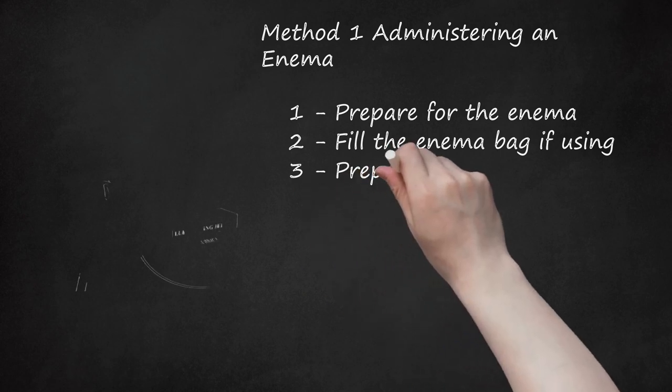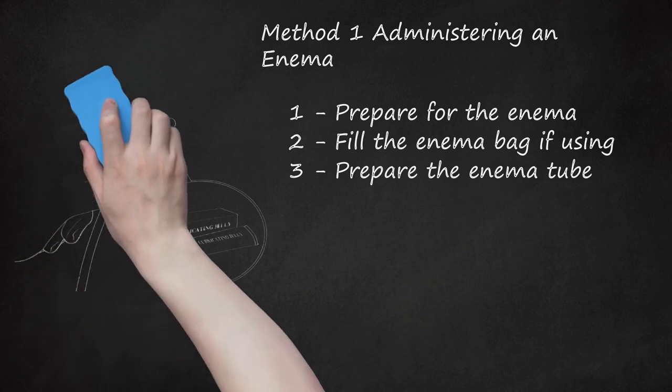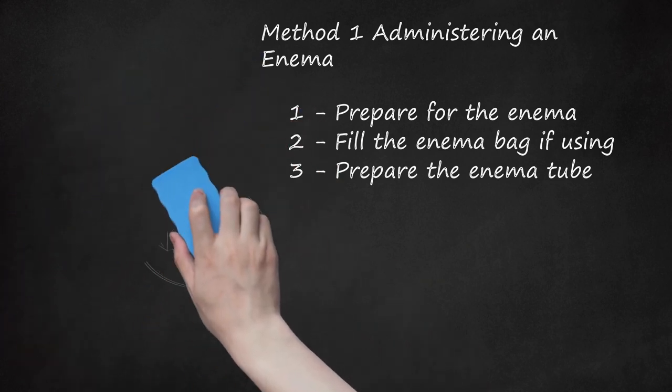Step 3: Prepare the enema tube. Measure and mark 4 inches on the enema tube so you are assured the tube is not inserted more than 4 inches into your rectum. Lubricate the end of the tube with a lubricating jelly, like KY jelly, to make insertion more comfortable.